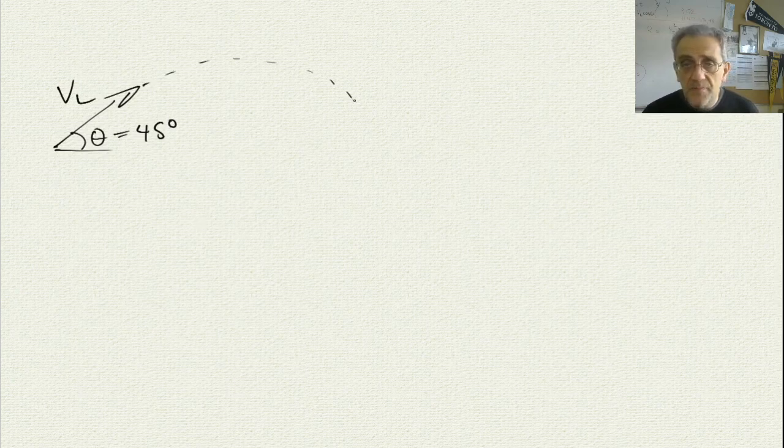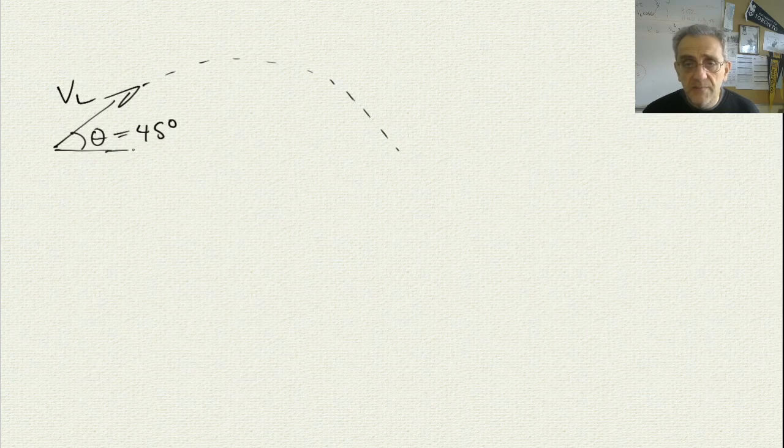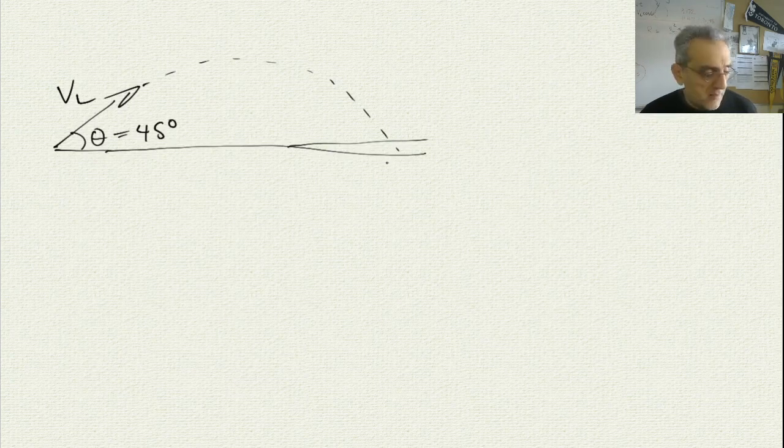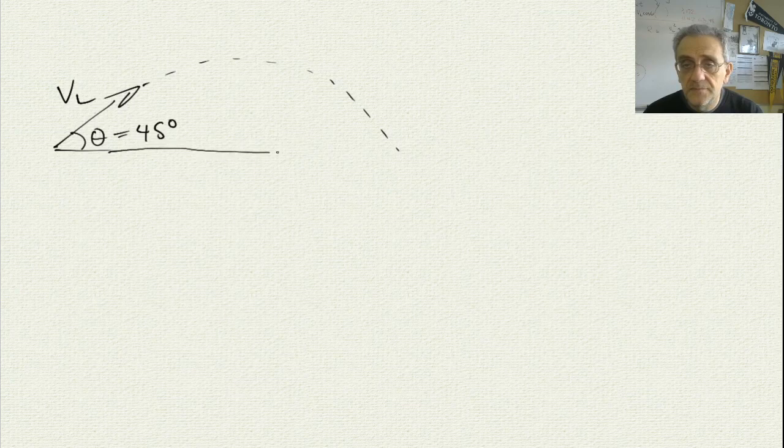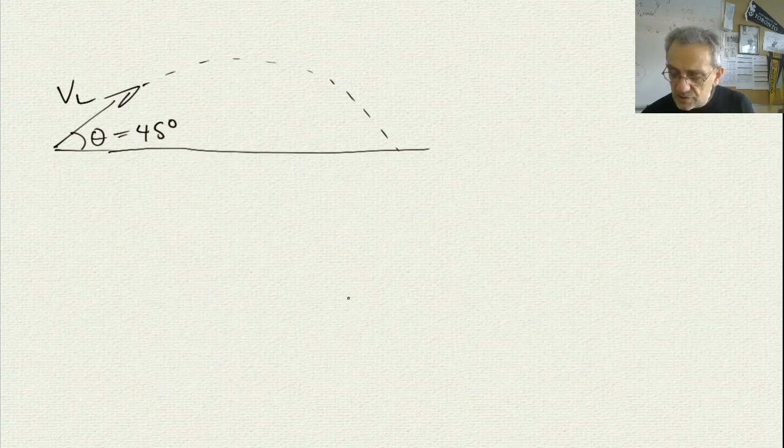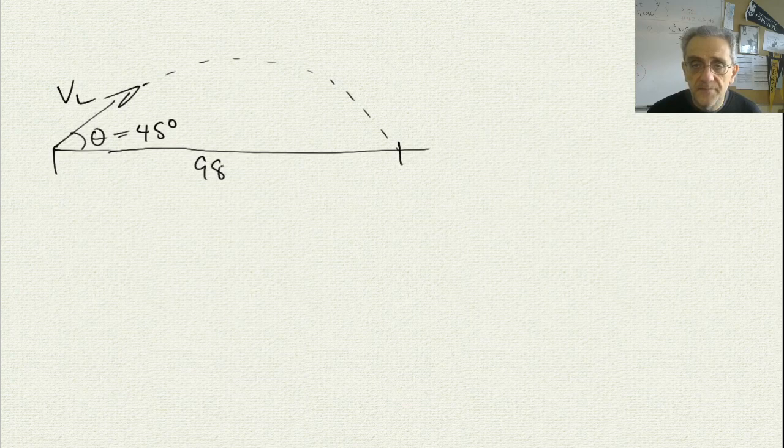And we don't know what the launch velocity is. That's what we want to find. But we do know that after it comes back to the ground, it has gone 98 meters. The question is, what is VL?